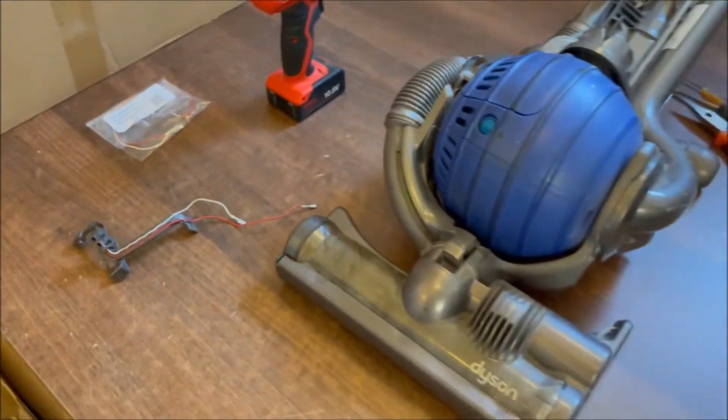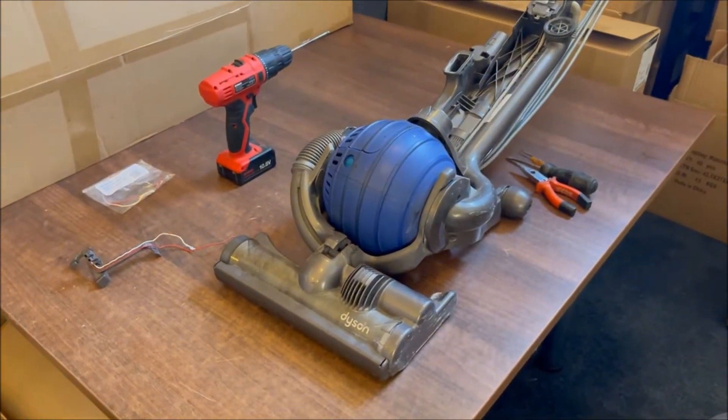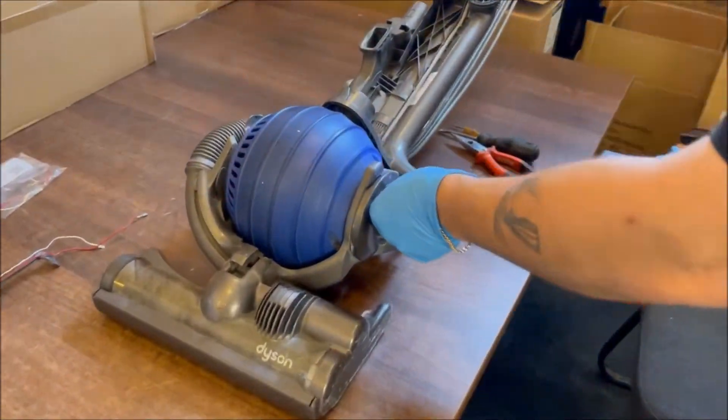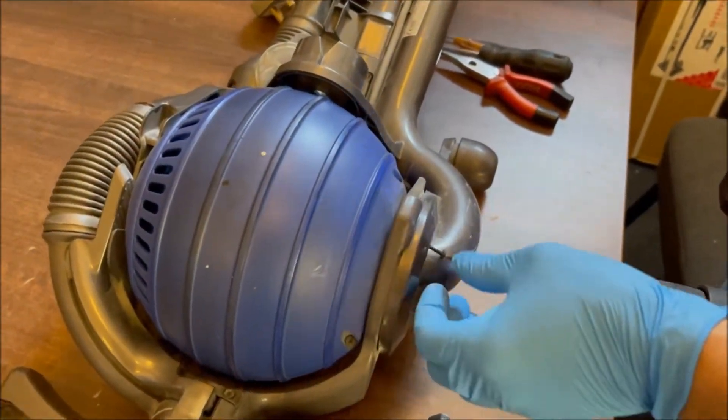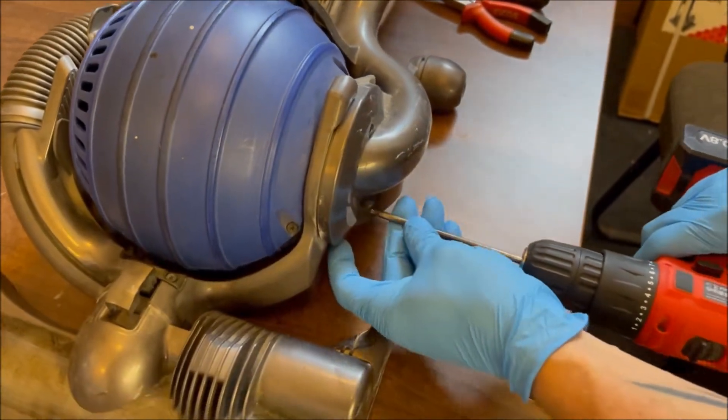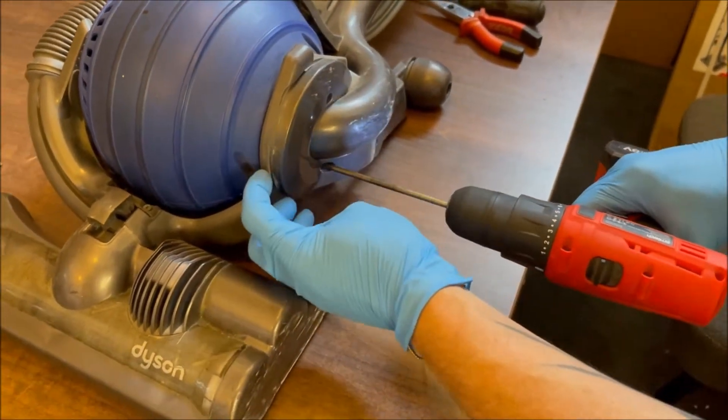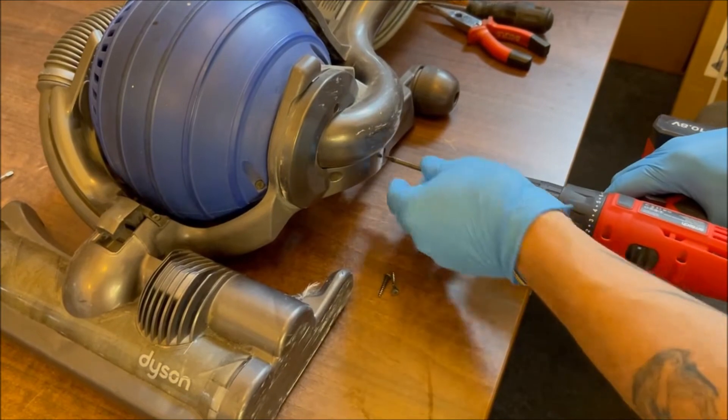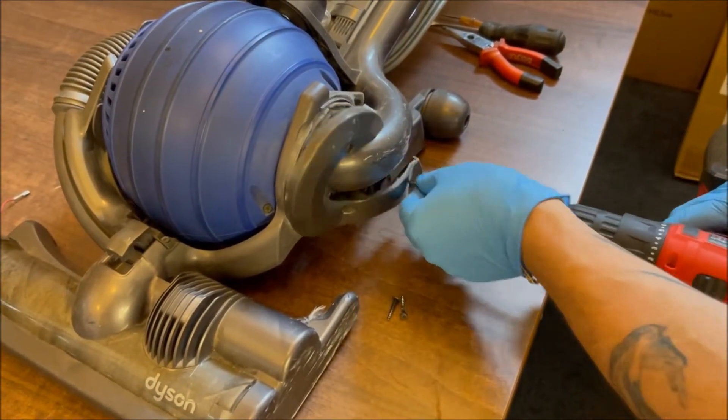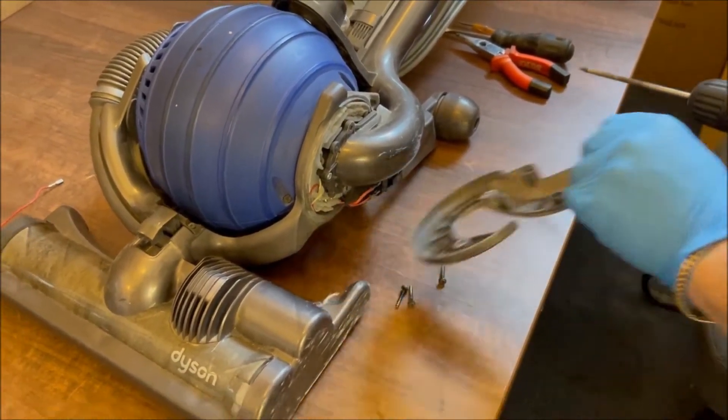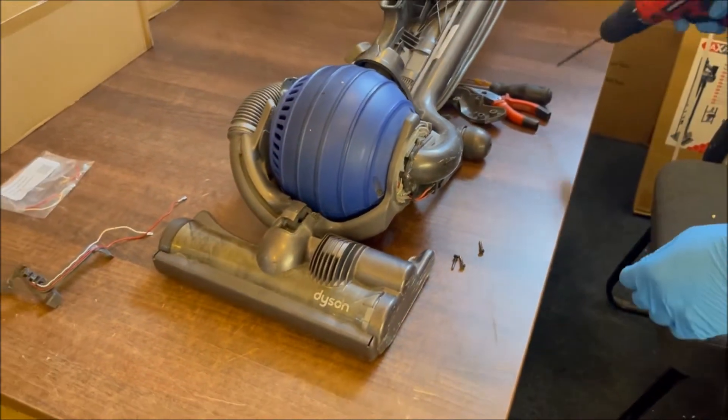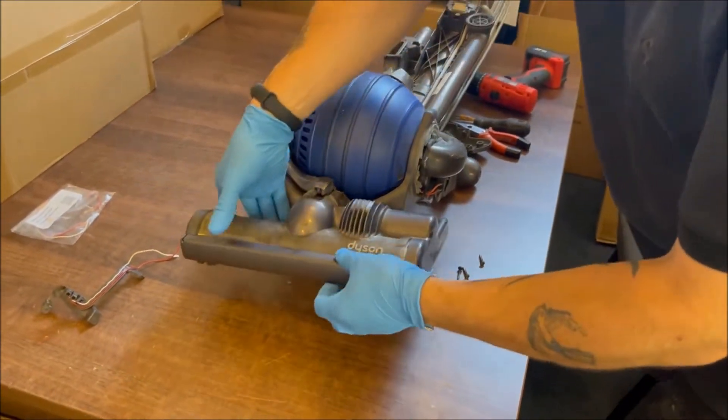So you have three screws first. All these screws are T15 by the way, Torx. So three screws, take the cover off.